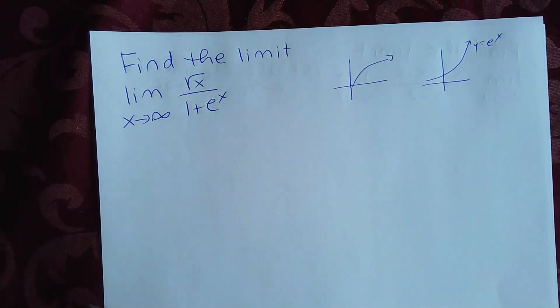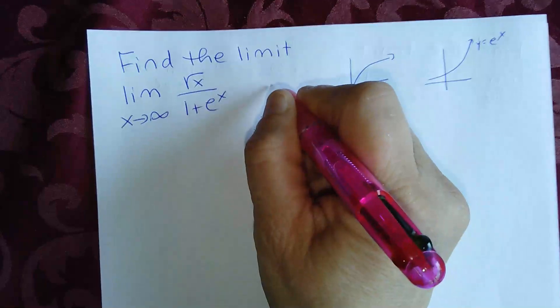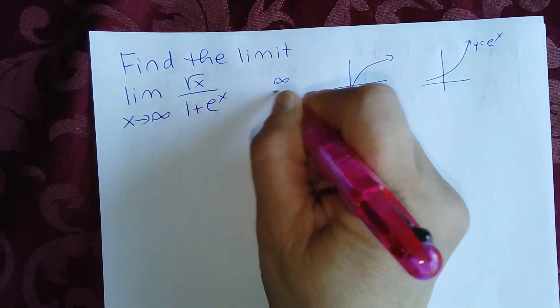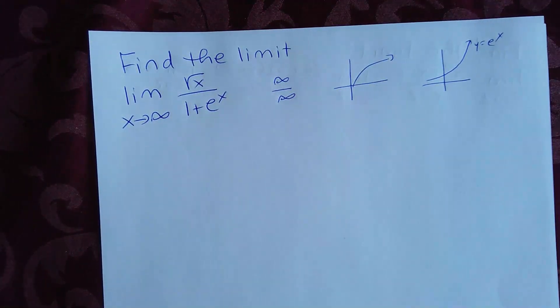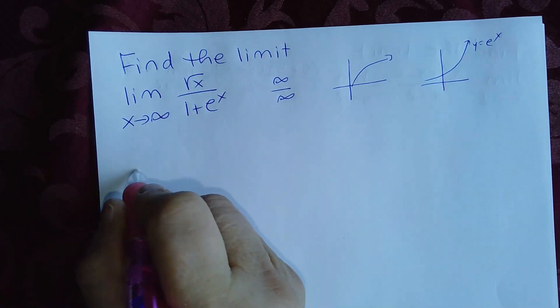So both the numerator and the denominator approach infinity as x approaches infinity. We have an indeterminate form of infinity over infinity. In this case, L'Hôpital's Rule applies.